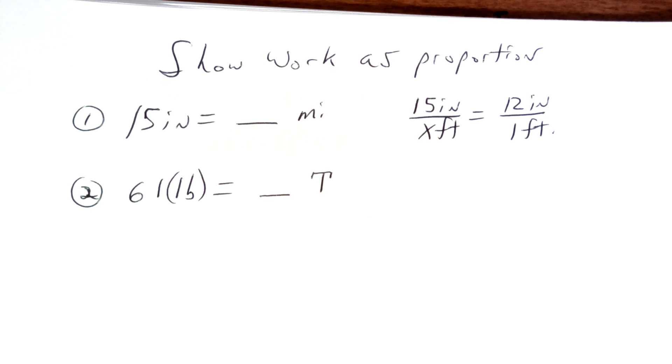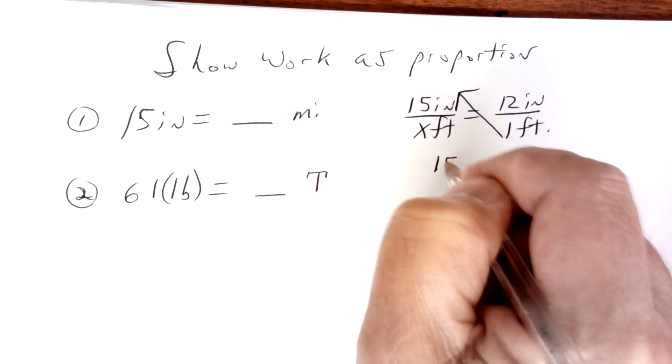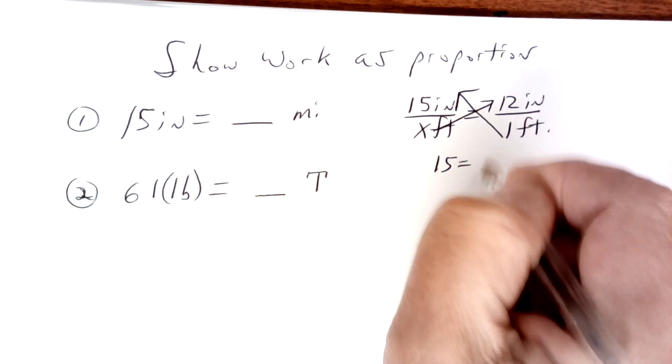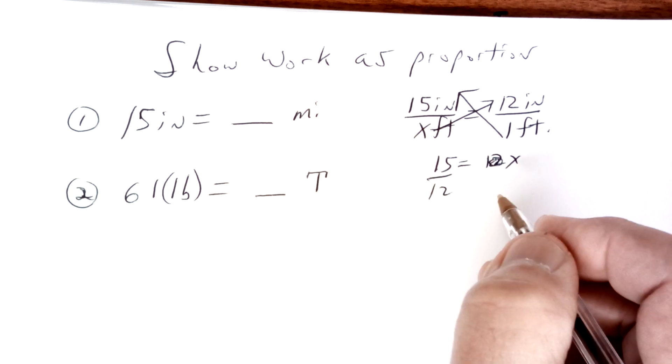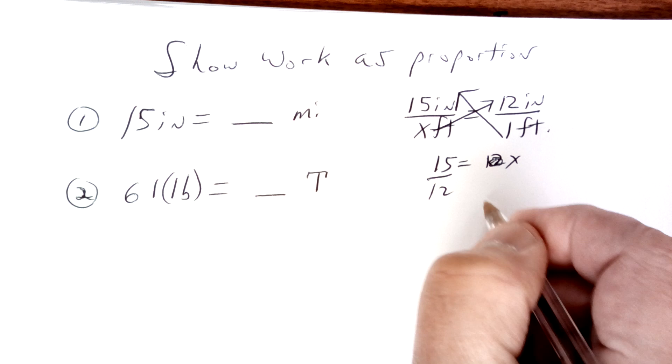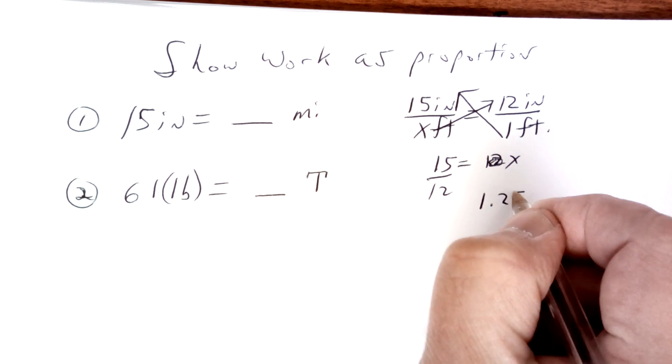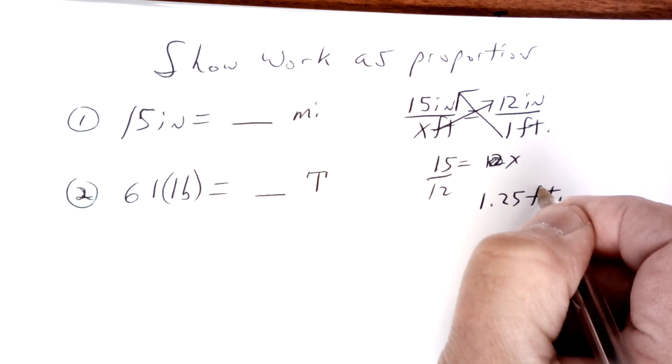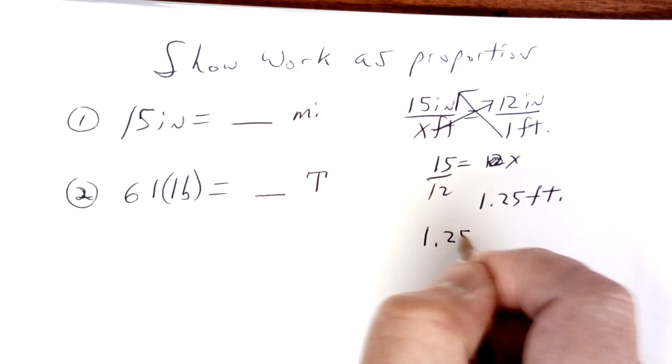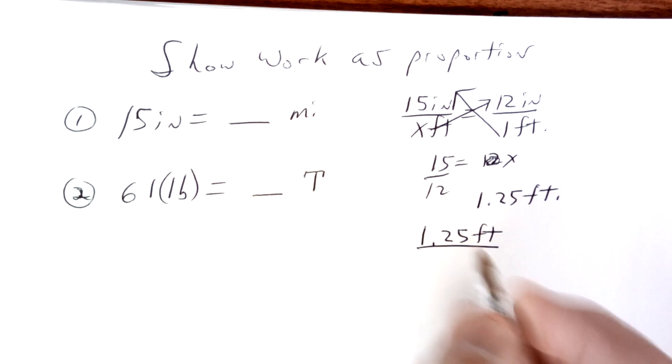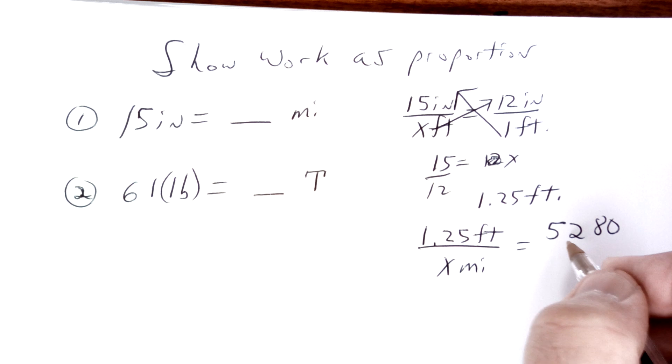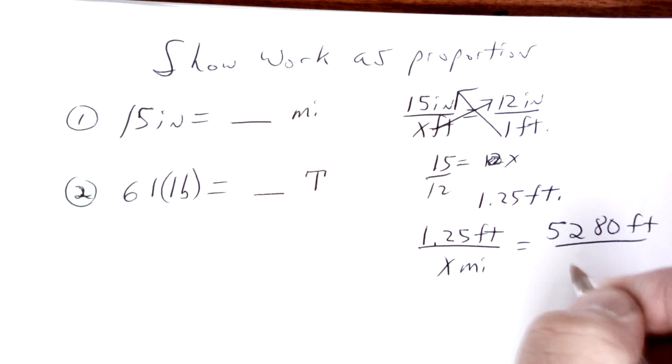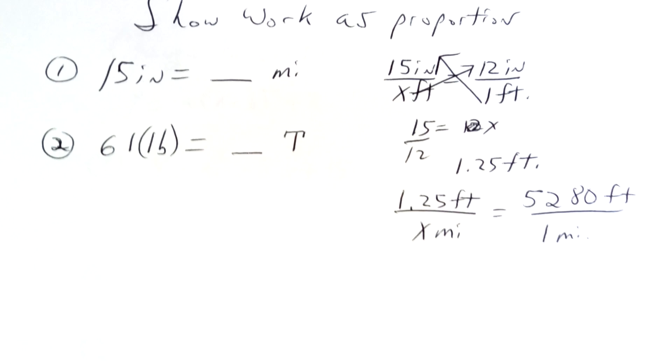So this becomes 15 is equal to 12x. And then you divide by 12 and you get 1.25 feet. Next thing I would do is say 1.25 feet equals how many miles? And I know that there's 5280. Say that to yourself. 5280 feet in one mile. And then cross multiply and whatever you get is your answer.